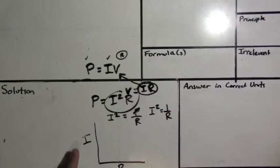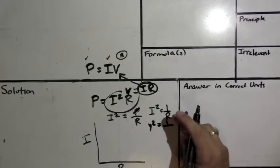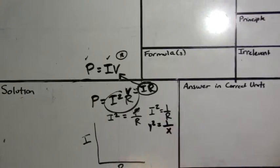Now I is on the y axis. So I can say y squared equals 1 over R is on the x axis. So you get a graph of y squared equals 1 over x.